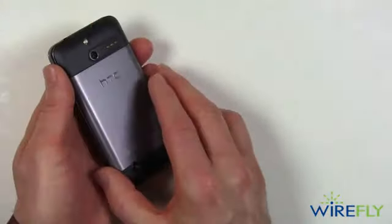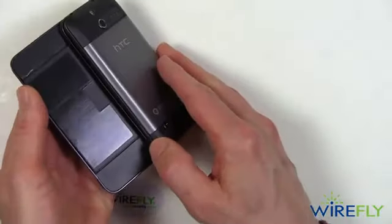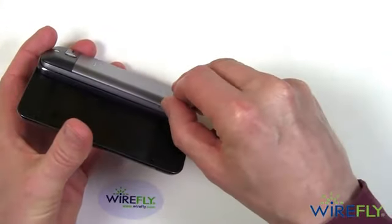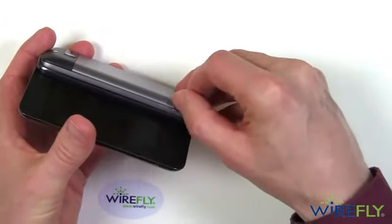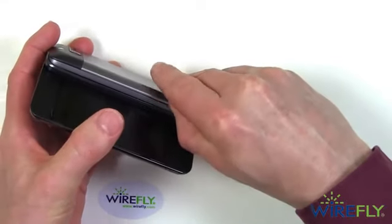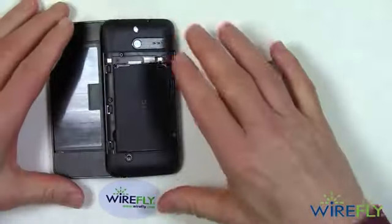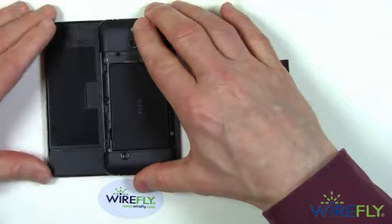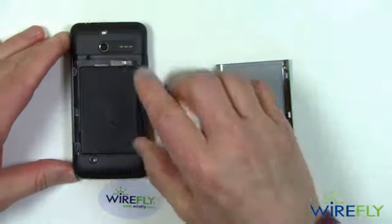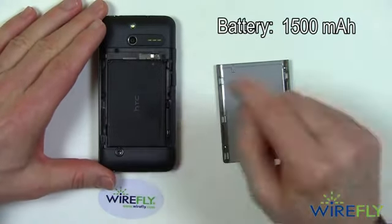To get under the battery cover, you pop it open like that. There's a little slot here to get your fingernail into — put your fingernail into that and lift the cover off. Underneath the cover there's a 1500 mAh battery.